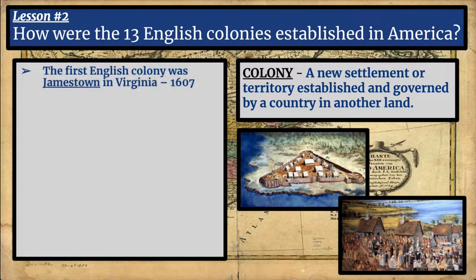The first successful English colony was called Jamestown, and it was established along a very swampy bay in Virginia in the year 1607. This is not the first English attempt to establish a colony — there was a colony called Roanoke that disappeared, and everyone who went there perished, and no one really knows what happened to them. So Jamestown is the first colony that actually survived in the Americas.